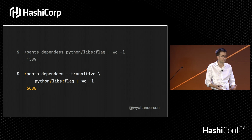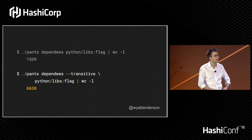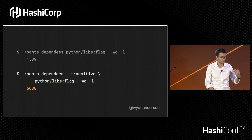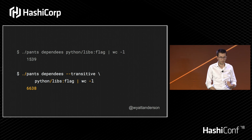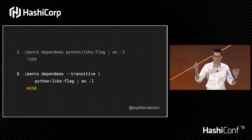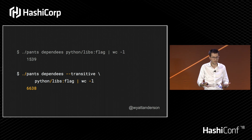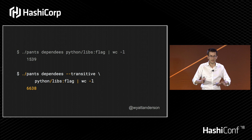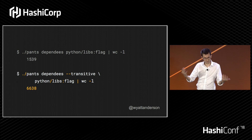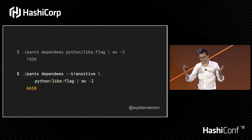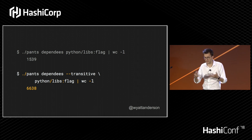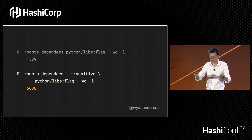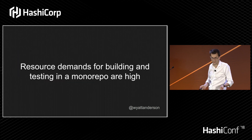For people working on core application infrastructure, shared code, shared libraries, we want to be able to test everything that depends on those core libraries. Maybe you have 660 things that depend on your code, or 66, or 6. We want to figure out everything that depends on that code and test it all at once when you make a change. That's a real big benefit of a monorepo.